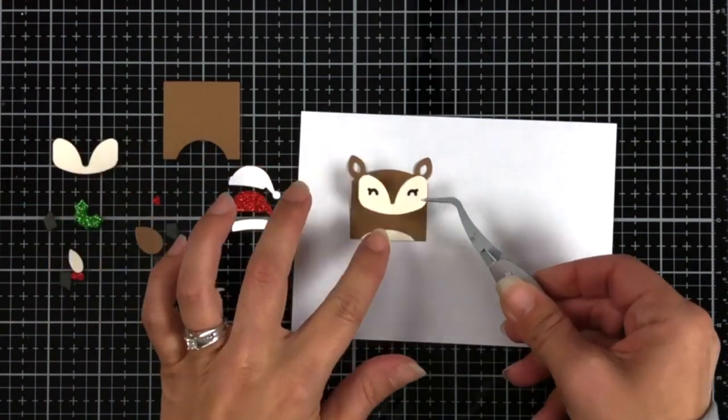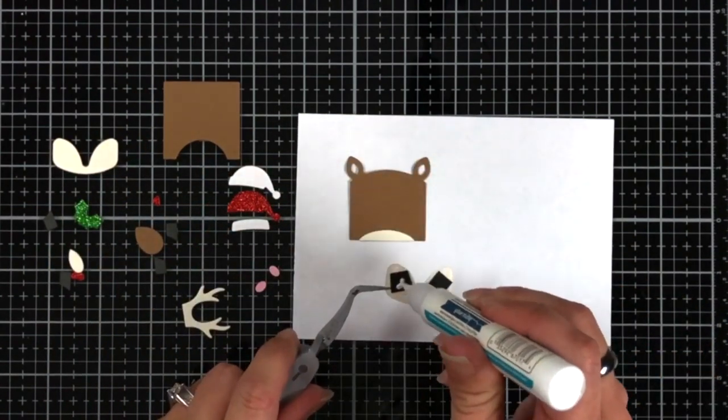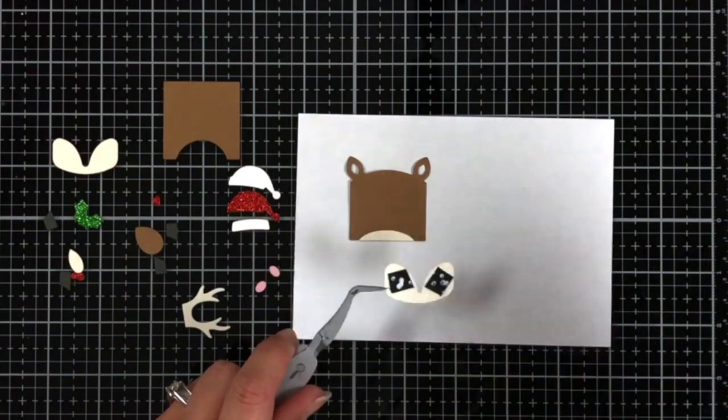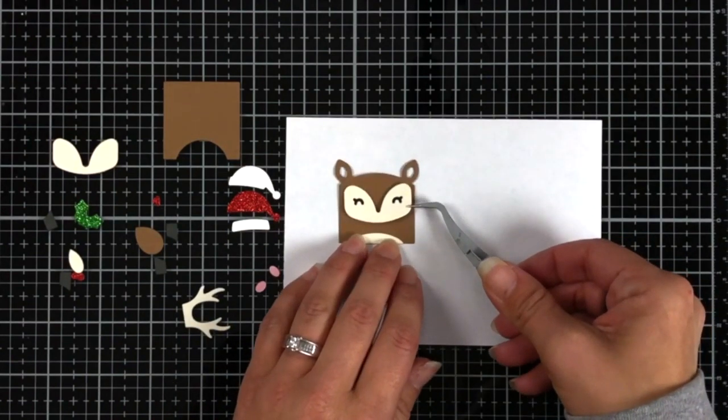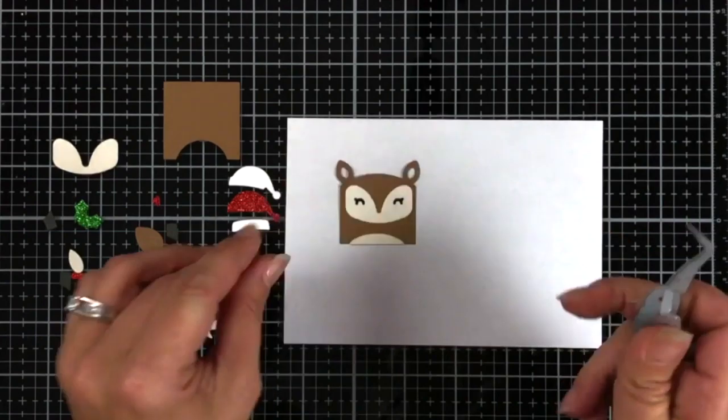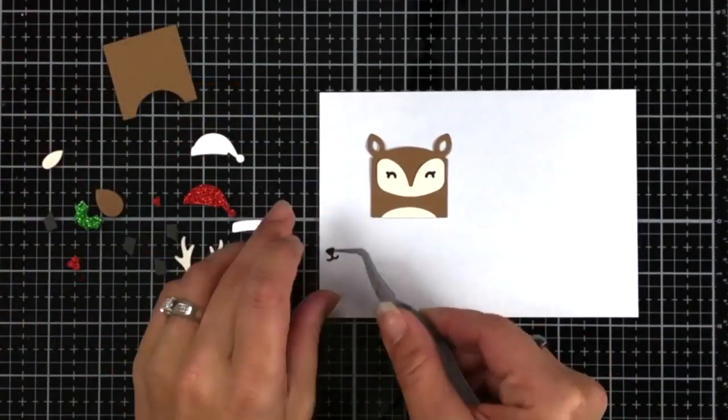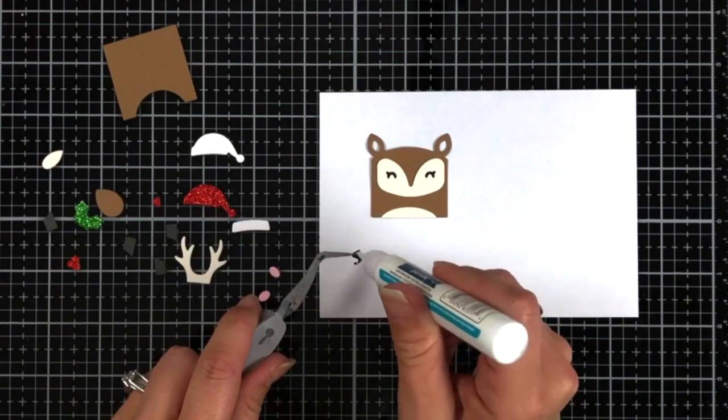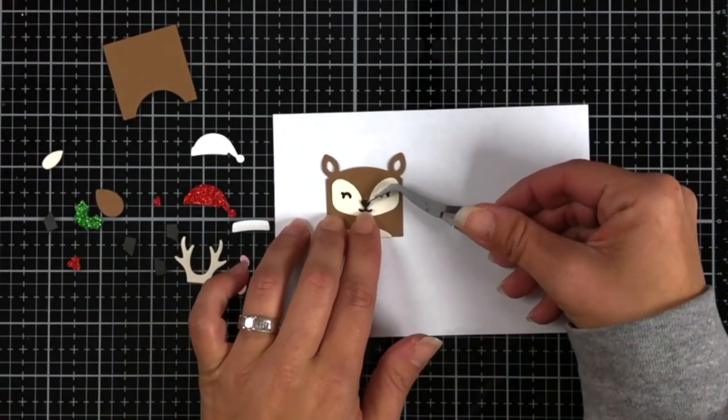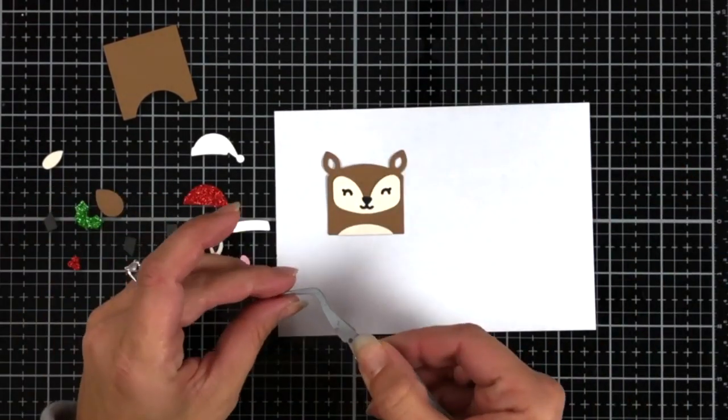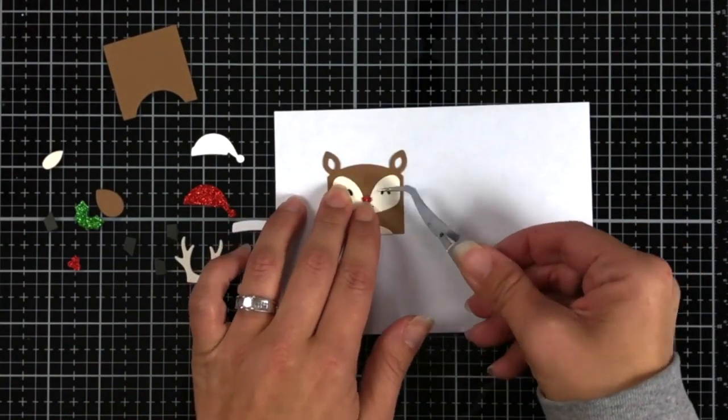I'm also going to be using the holiday hats die and there are a couple different hats in here. There's a winter hat, the Santa hat which I have die cut there on screen, and then there's also the witch hat that you could use for any of the tiny gift box Halloween add-ons. So I decided to go with the Santa hats.